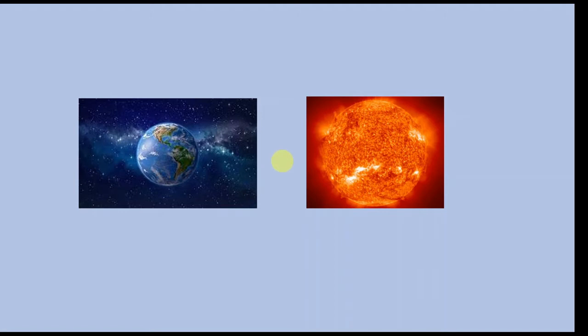It is now established beyond any element of doubt that all the elements we see in the periodic table are actually synthesized inside a star. They are created inside a star during its various phases. Not only that — interestingly, when a star dies, sometimes very catastrophically, even in that process of death, a large number of elements are synthesized inside the star. Of course, the death of the star is not always catastrophic; sometimes it can have a very quiet ending.